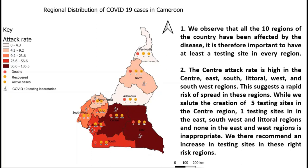Secondly, the attack rate is high in the center, east, south, littoral, west, and southwest regions. This suggests a rapid risk of spread of the disease in these regions, since the attack rate is a measure of risk. While we salute the creation of five testing sites in the center region, one testing site in the east, south, west, and littoral regions and zero testing sites in the east and west regions is inappropriate. We therefore recommend an increase in testing sites or the creation of more testing sites in these high-risk regions.